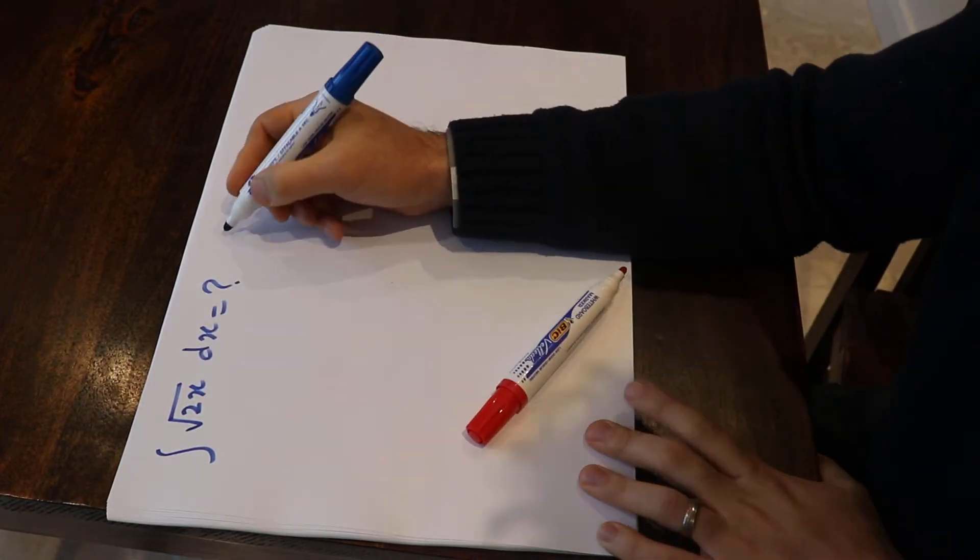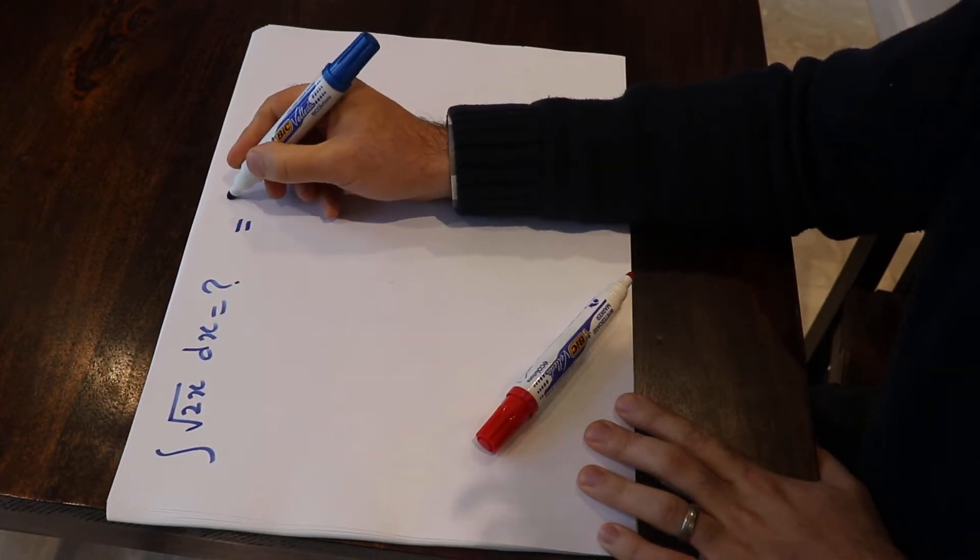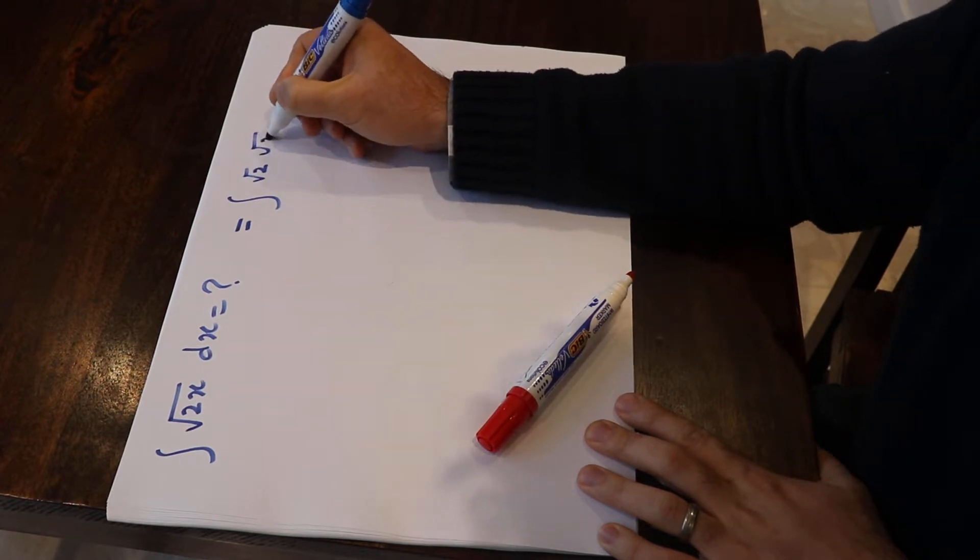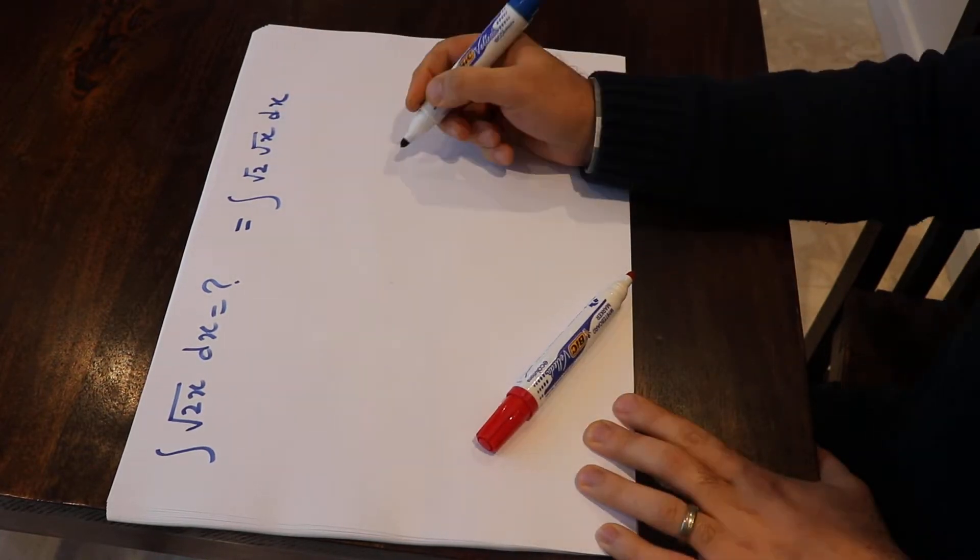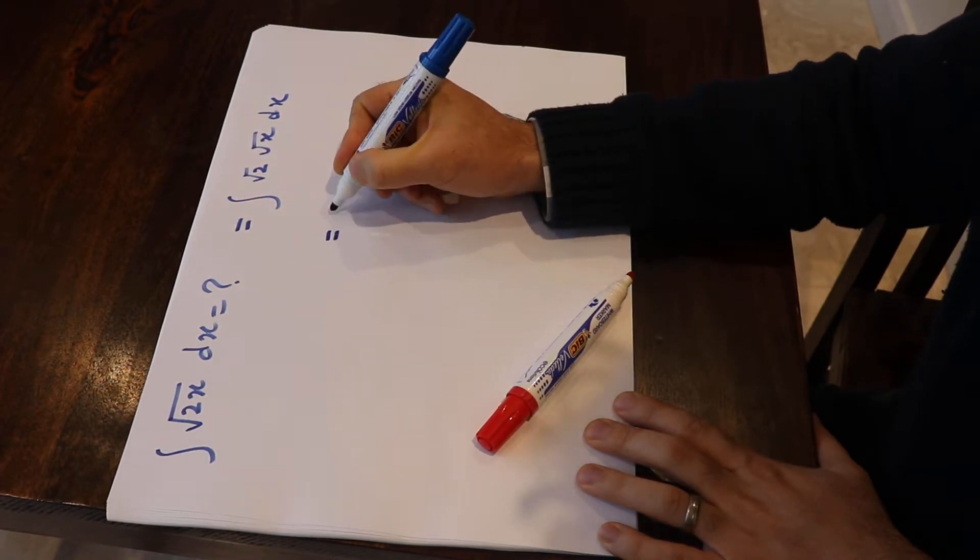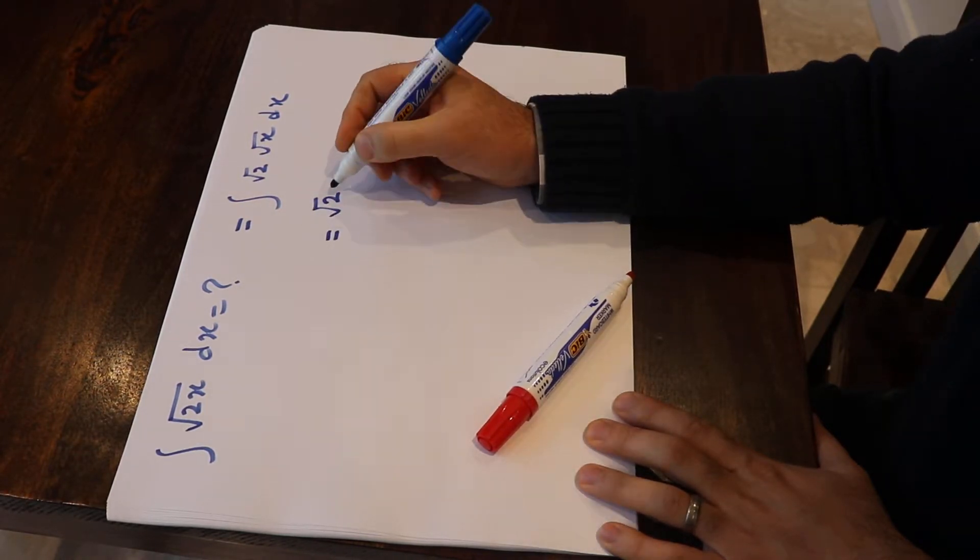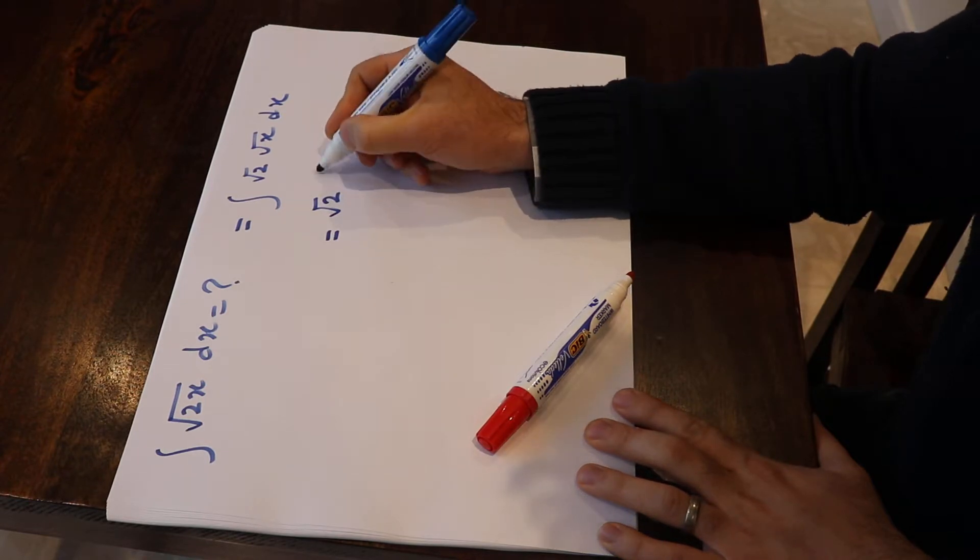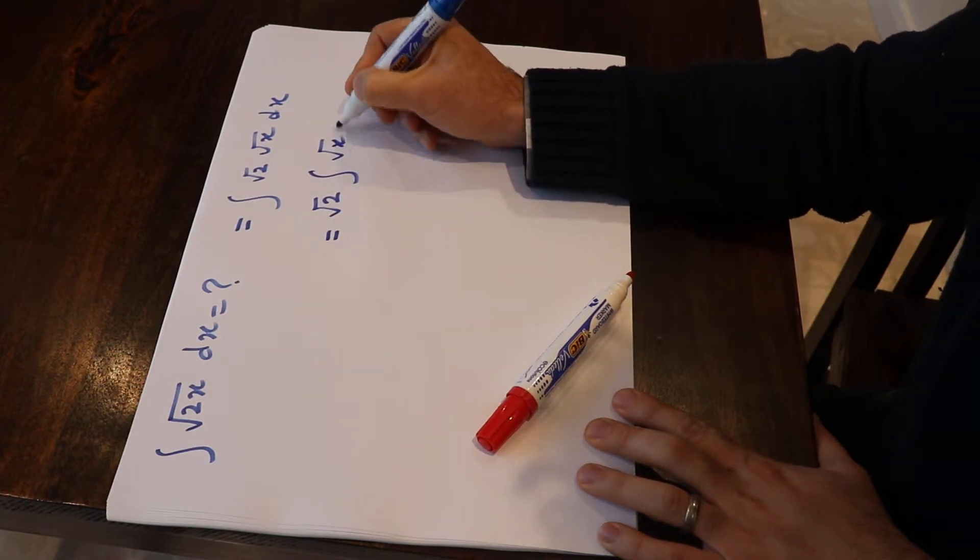So this integral is basically equal to √2 times √x dx. And since √2 is a constant, I can simply take it out of the integral. That will be √2 ∫√x dx,